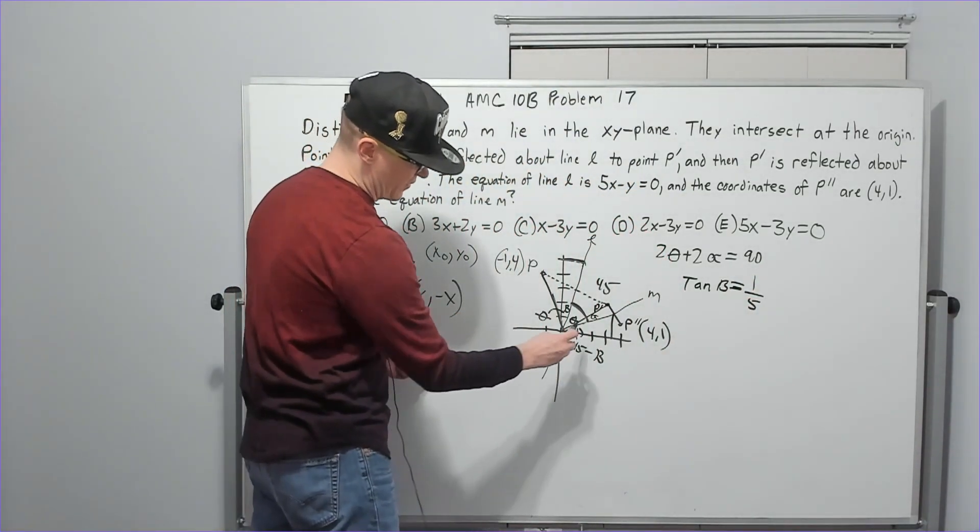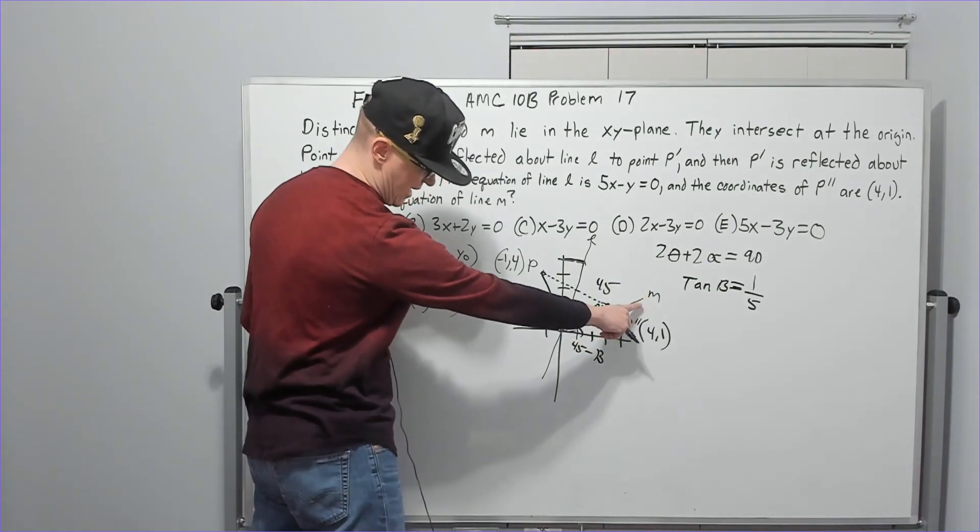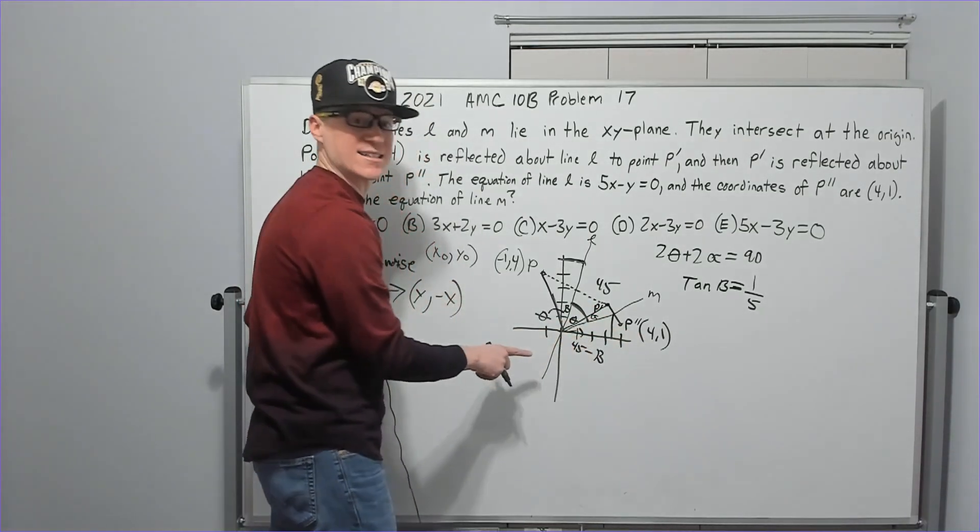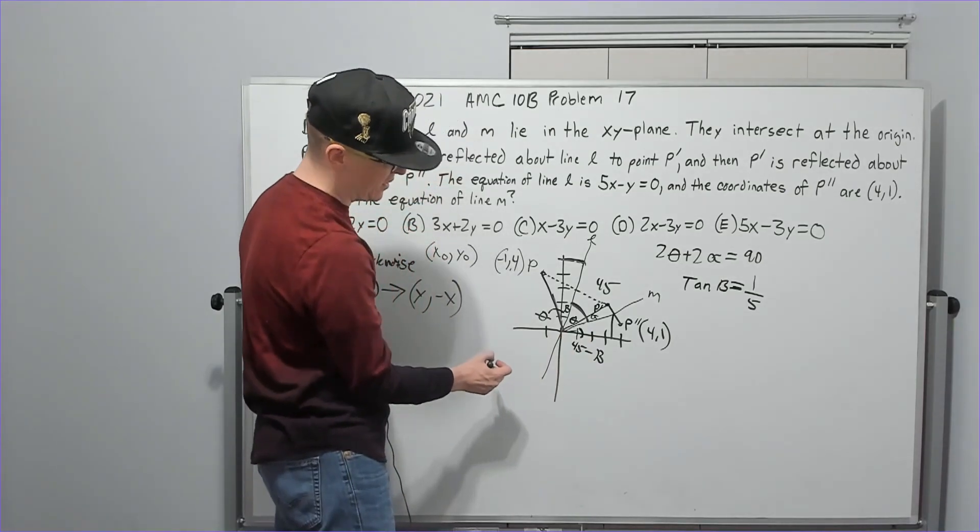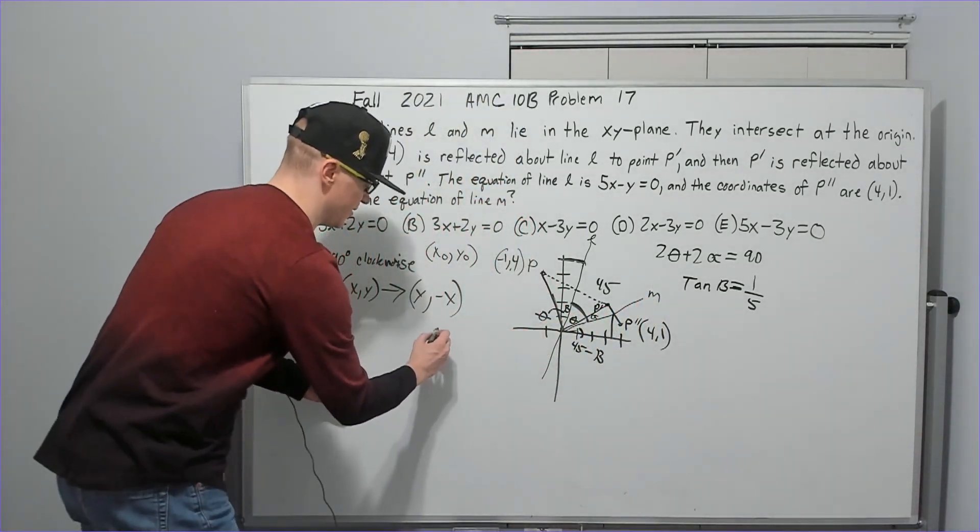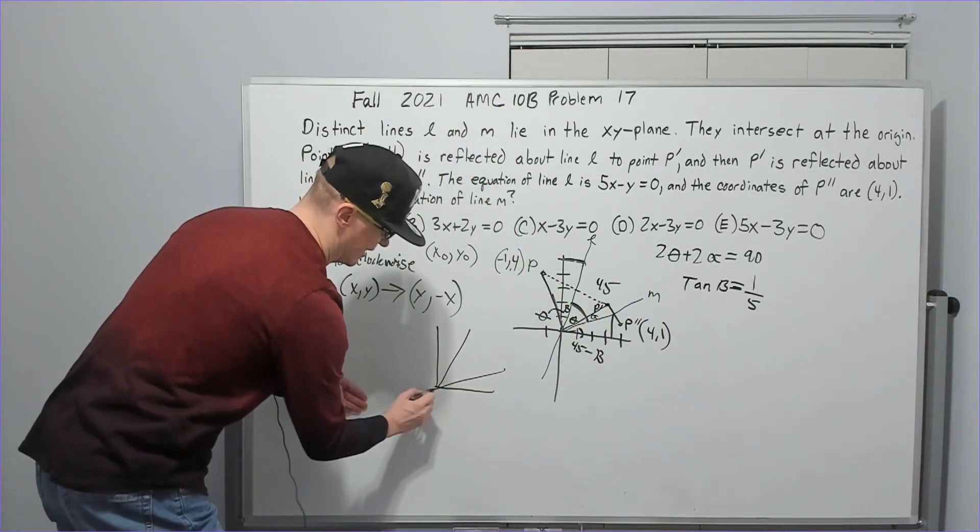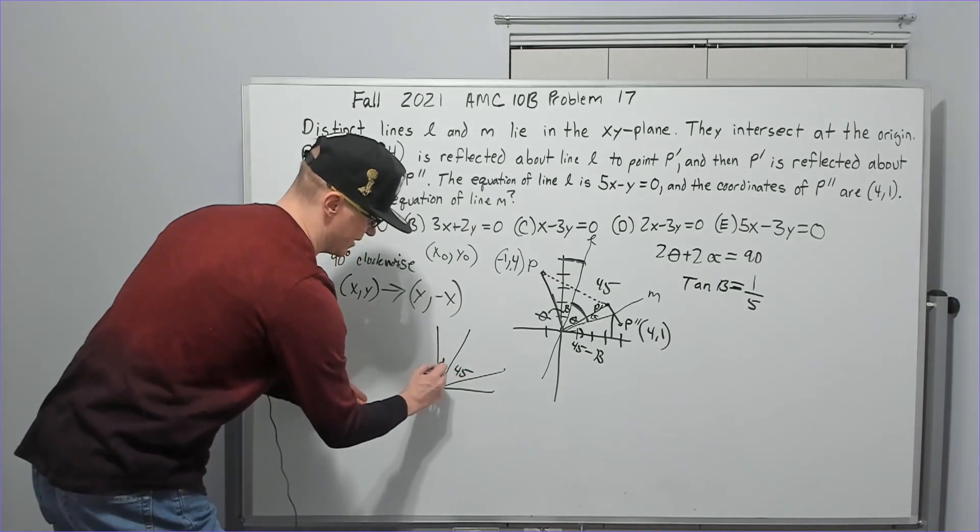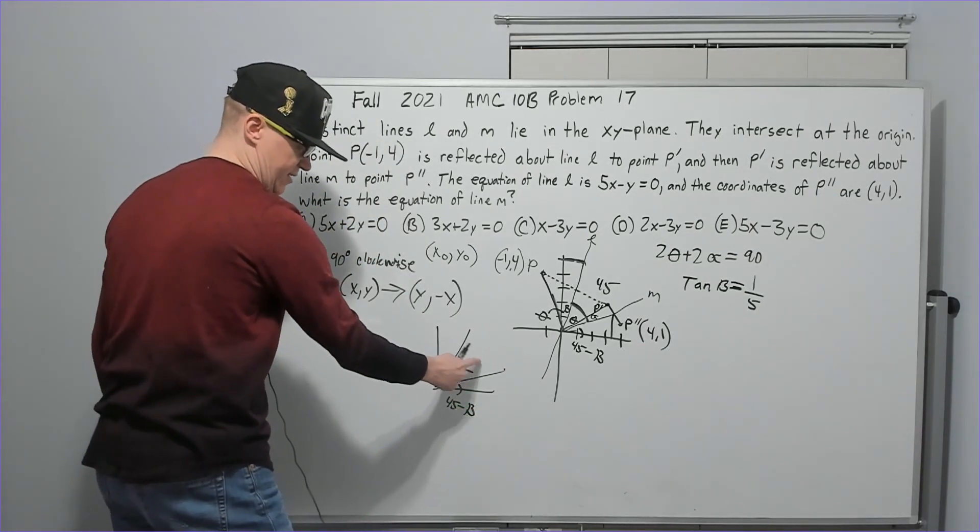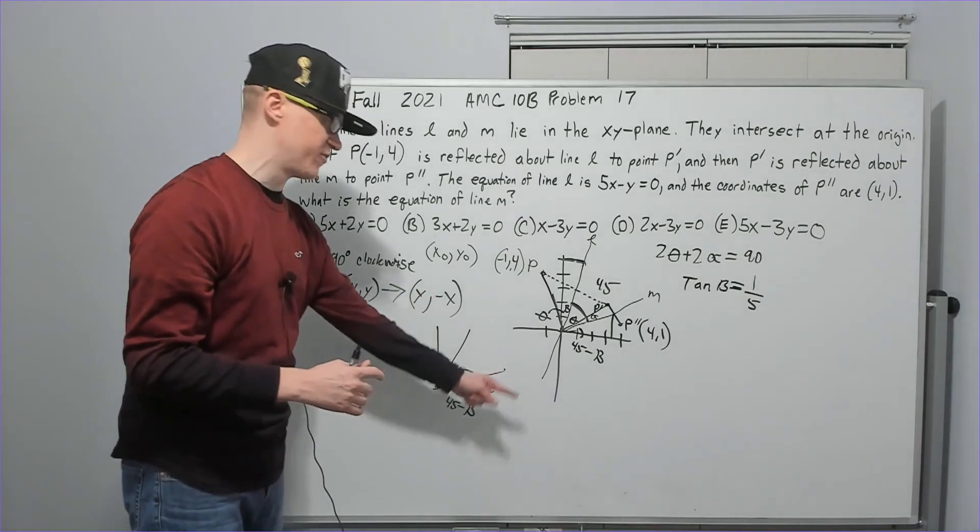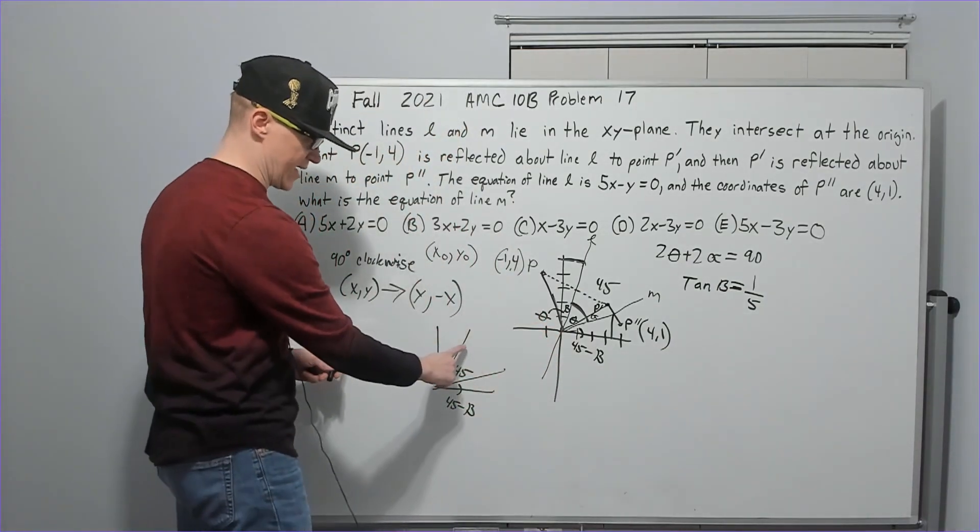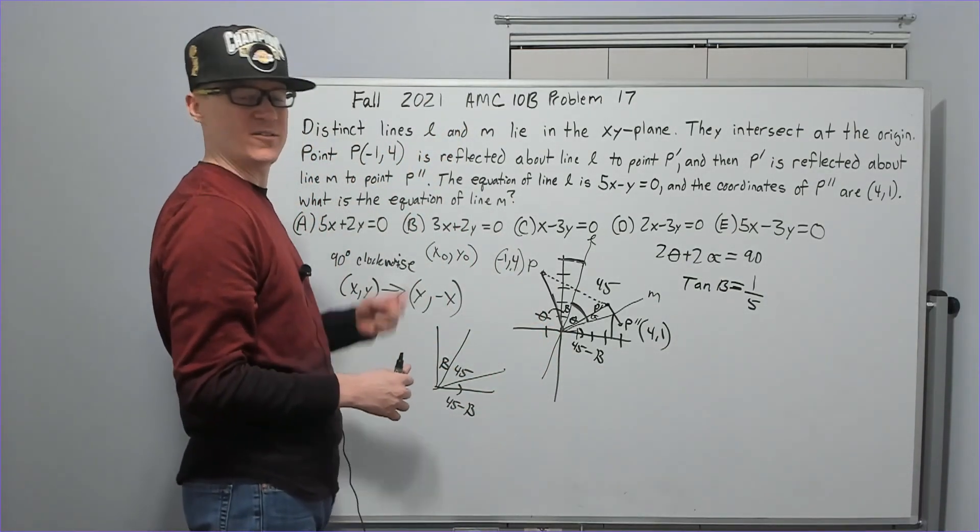So we're saying that tangent of beta is equal to one over five. Now, I know that this angle down here between line M, okay, and the X axis, right? That angle is going to be 45 minus beta. If you don't see what's happening, let's look inside of it real quick. You've got two lines like this that make 45 degrees. I'm calling this beta and this 45 minus beta. So when I add this one to this one to this one, all three make 90, and we know the first quadrant is 90. So what was this theta plus alpha thing for? That was just to establish that the angle between the two lines was 45 degrees.